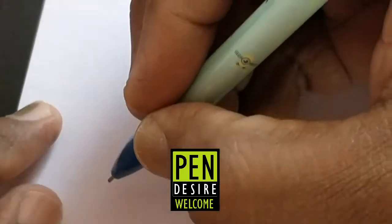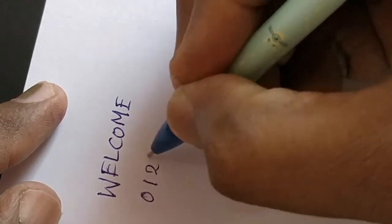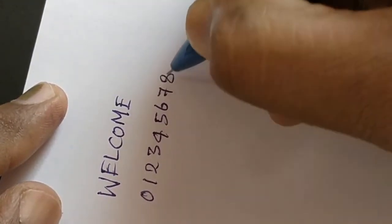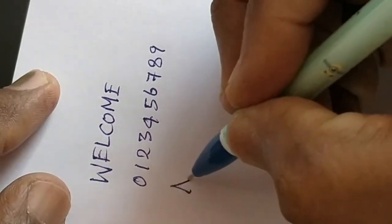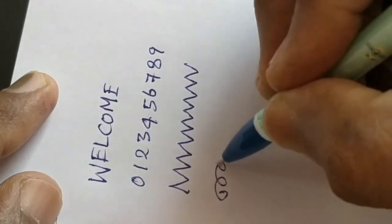Pen Desire welcomes you. Let's take a look at Cello Bling. This is a ballpoint pen. This pen costs about rupees 5. This pen writes slim, it is weightless but tall in design.